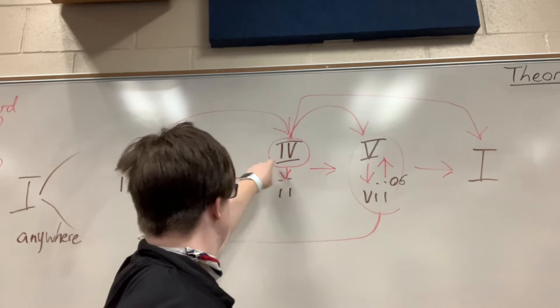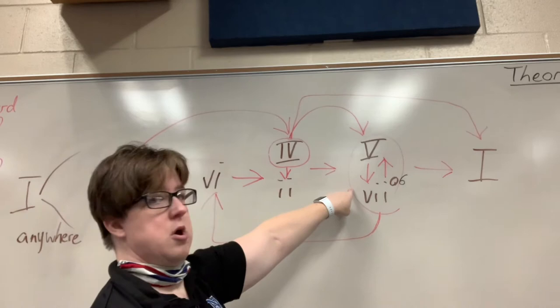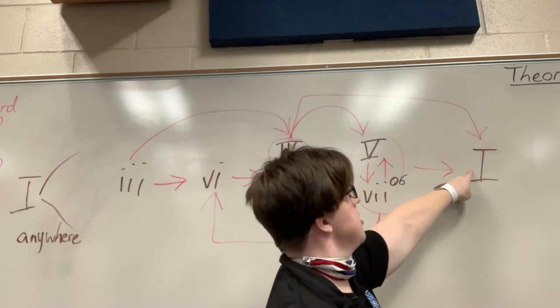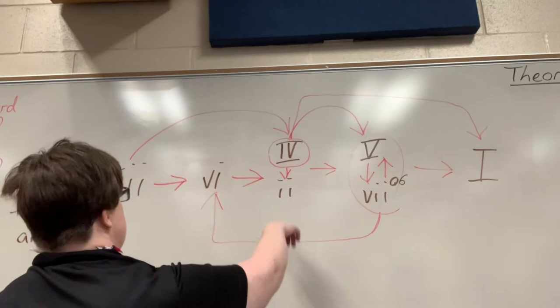Once we get to this column, 4 can go to 2 or 4 can go to the next column. Or, 4 can go to 1. We just learned that 4 to 1 is our plagal cadence.